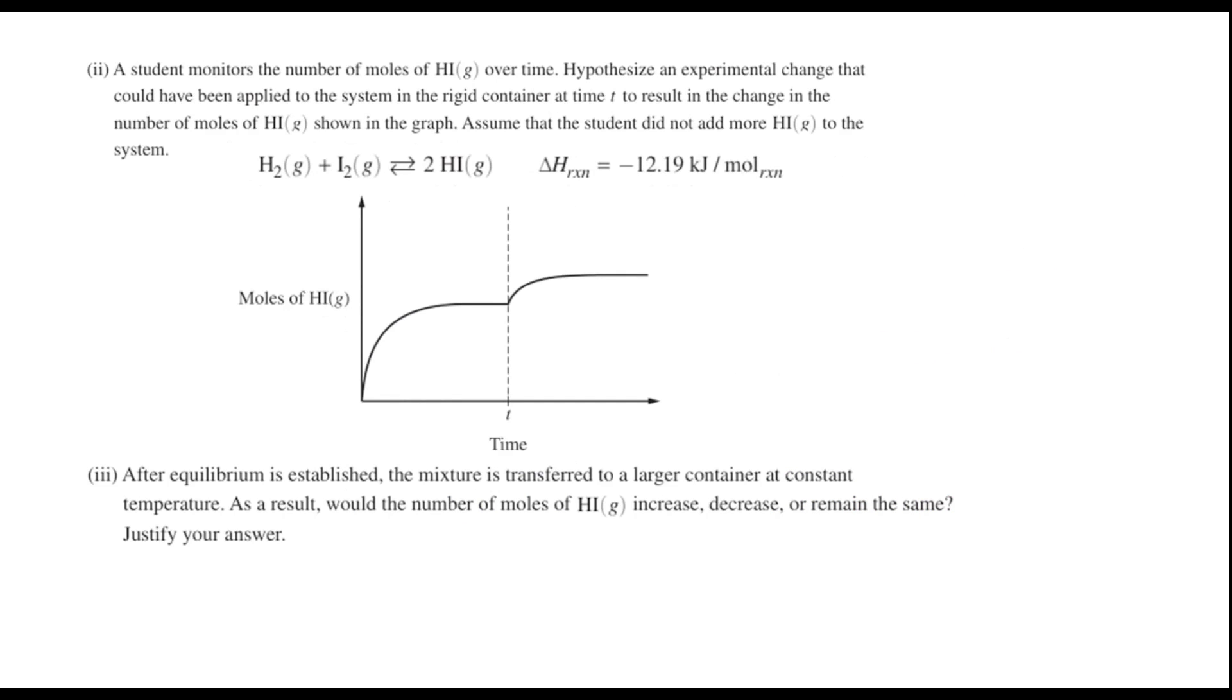Now, part B2 says a student monitors the number of moles of HI gas over time. We're going to hypothesize an experimental change that could have been applied to the system in the rigid container at time T to result in the change in the number of moles of HI gas shown in the graph. And we're going to assume that the student did not add more HI gas to the system. So notice that this time T, all of a sudden, the HI moles jumped up. And why did that happen? Well, there are a couple things that could have happened.